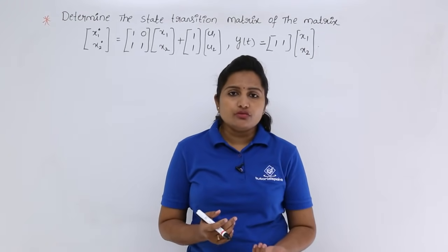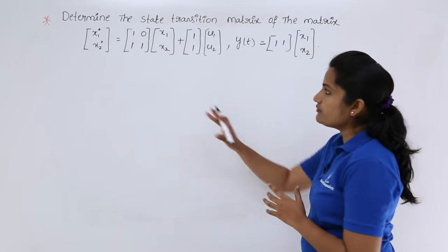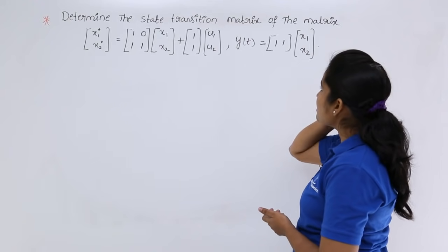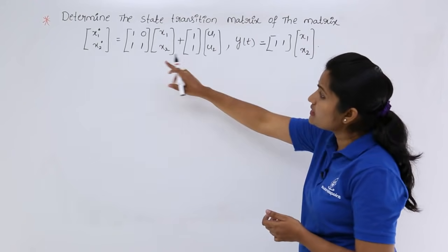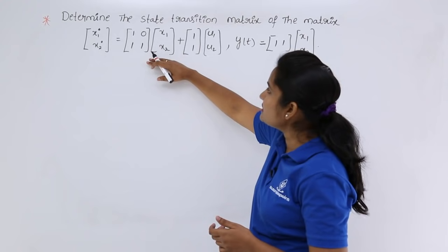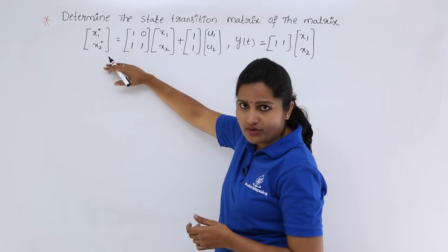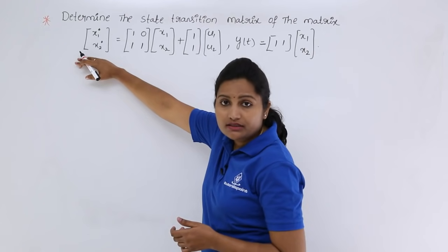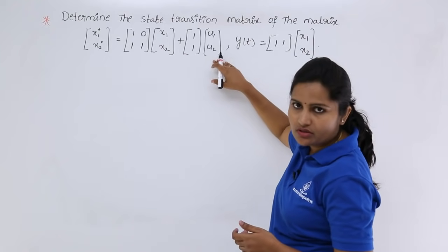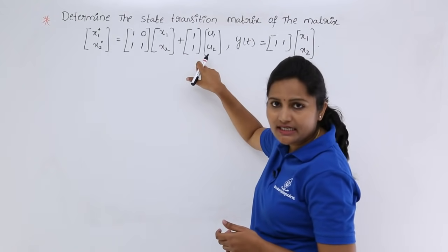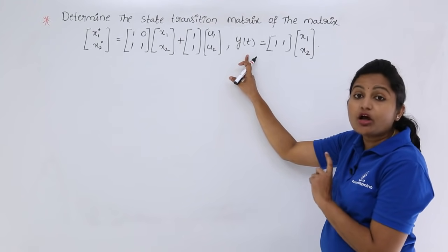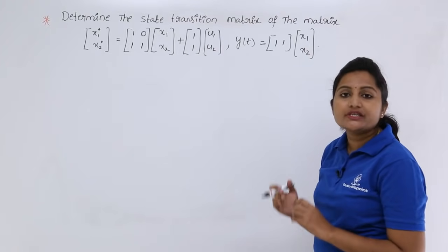Here, we are going to find the state transition matrix for the given state model. The problem is: determine the state transition matrix of the given matrix. This is the state model — x-dot equals A times x plus B times u, which is the state equation. The equation with y(t) is the output equation. These two together form the state model.